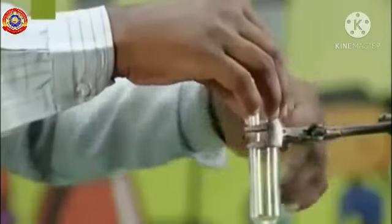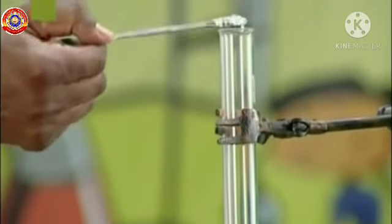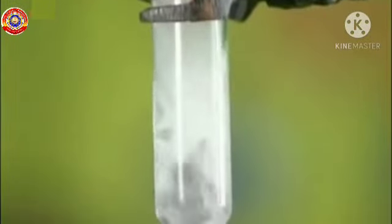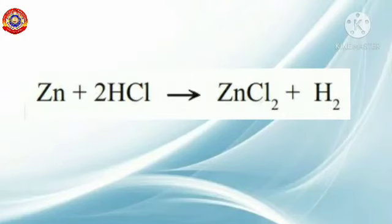You all know that acids react with reactive metals and form hydrogen gas. A little amount of dilute hydrochloric acid is added in a test tube containing zinc granules. What do you observe? Did you see the colorless hydrogen gas? If you show a burning splinter to the mouth of a test tube containing hydrogen, the gas will burn with a pop sound. The equation for this chemical reaction is: Zn + 2HCl → ZnCl₂ + H₂.